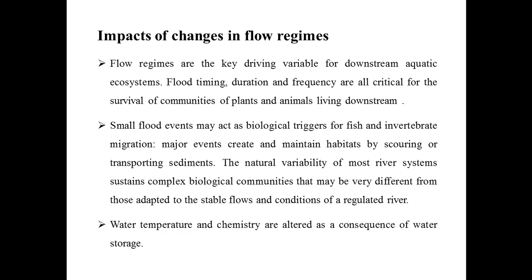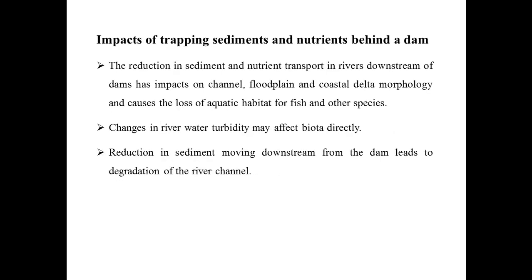The water temperature and chemistry are altered as a consequence of water storage. Next is the impacts of trapping sediments and nutrients behind the dams. Due to the construction of dams, all the sediments travelling with the river water are deposited. Also, nutrients from upstream coming towards downstream are dropped due to the construction of dams. The reduction in sediment and nutrient transport in rivers downstream of dams has an impact on channel, floodplain, and coastal delta morphology, and causes the loss of aquatic habitat for fish and other species. The reduction in sediment going downstream leads to degradation of the river channel.